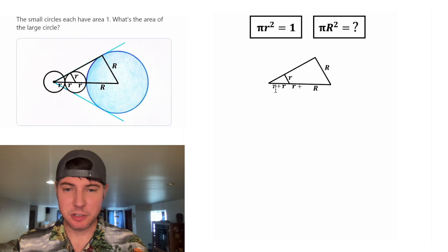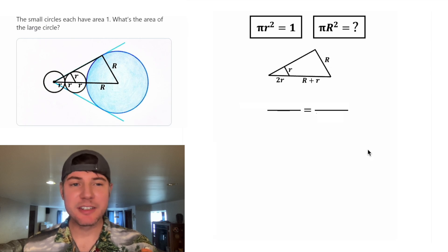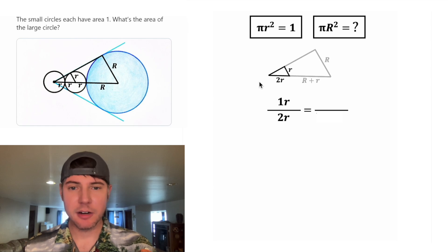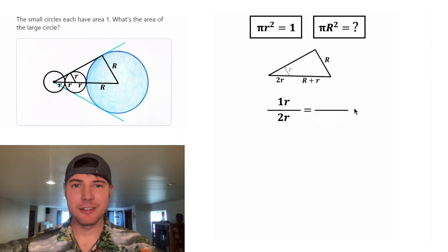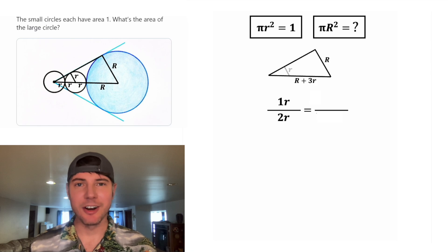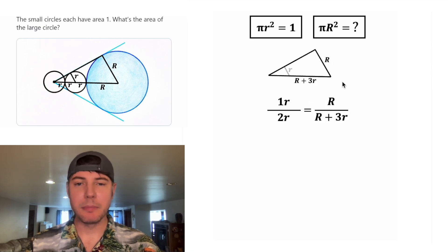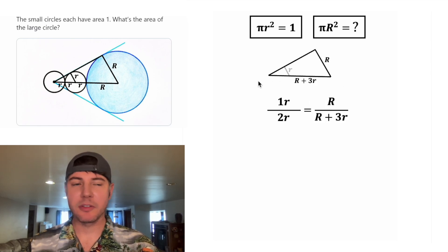This piece right here is gonna be little r plus little r, which is two little r. And this piece right here is gonna be big R plus little r. And now we're ready to set up a proportion. Let's do this little triangle first. We're gonna do one little r over two little r. And then we can focus on this larger triangle. This piece is big R, and this bottom piece is gonna be two little r plus big R plus little r, which is the same thing as big R plus three little r. So the other half of the proportion is gonna be big R over big R plus three little r.